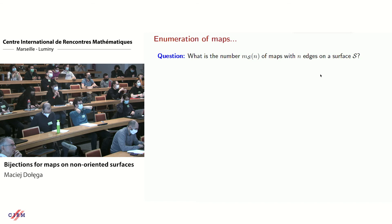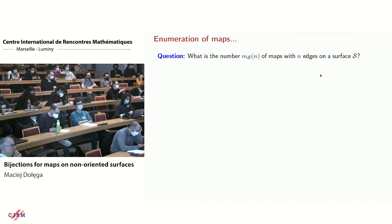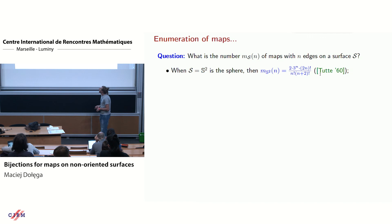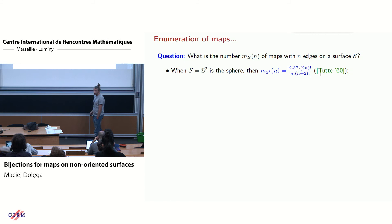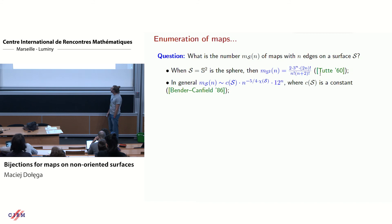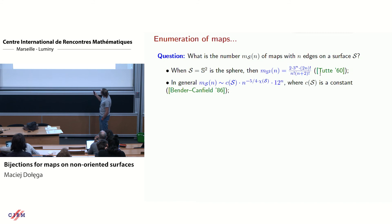One of the most natural questions for a combinatorialist is: what is the number of maps with n edges on a given surface? This question was studied by Tutte in the 60s when he initiated studying combinatorial maps, and he found a beautiful formula for the number of planar maps — maps on the sphere. More than 25 years later, the general answer was given for arbitrary surfaces. This is an asymptotic answer, but asymptotically this is the number of maps with n edges on a given surface.